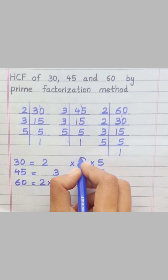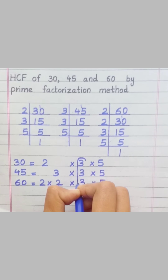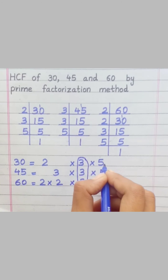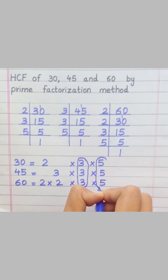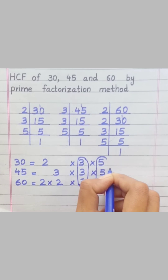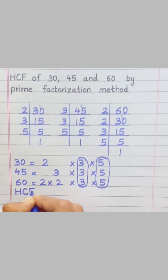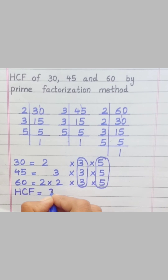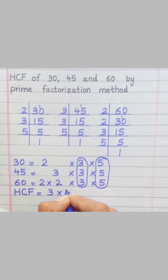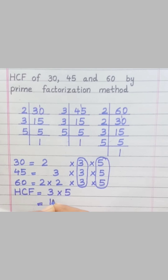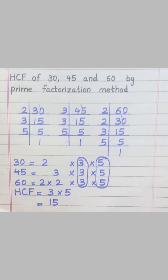Loop the factors that are common to all of the given numbers. HCF equals 3 × 5 = 15.